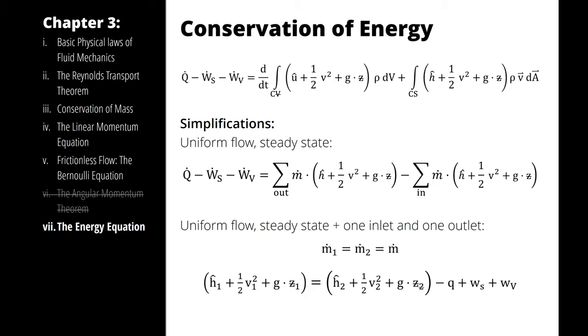I can then start to simplify it for some common situations that we're going to encounter. If I have uniform flow that is also steady state, I can write the net rate of heat transfer in minus the shaft power out minus the viscous power out is equal to the sum in the outward direction of mass flow rate times the quantity specific enthalpy plus specific kinetic energy plus specific potential energy minus the summation in the inward direction of mass flow rate times specific enthalpy plus specific kinetic energy plus the specific potential energy. This looks a lot like something you would see in a thermal problem, doesn't it?